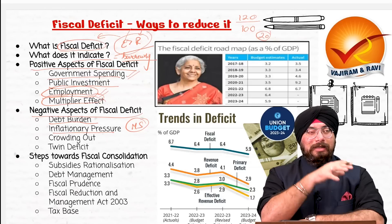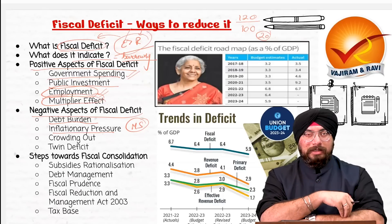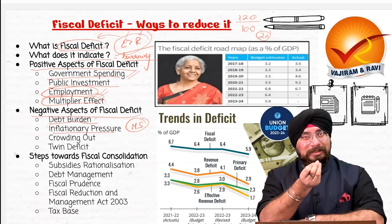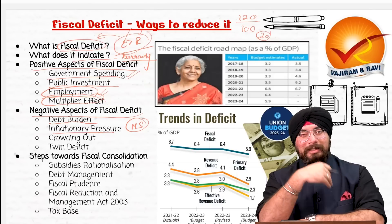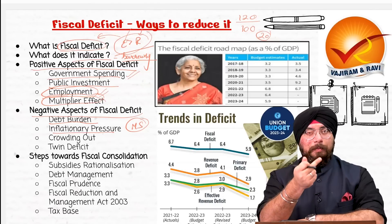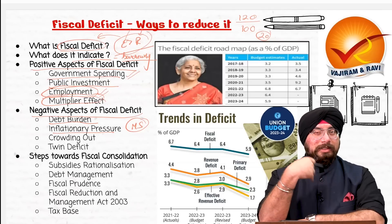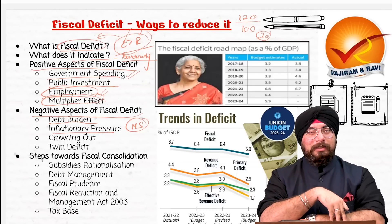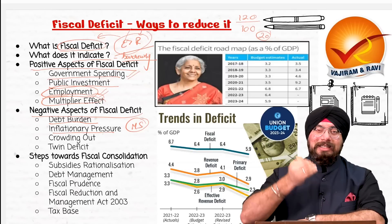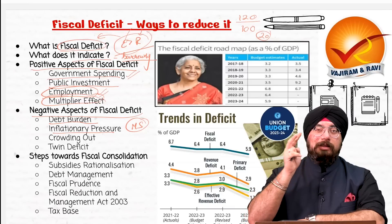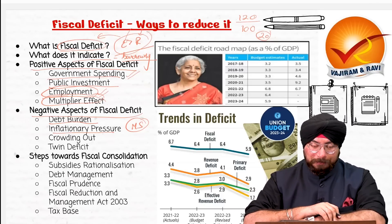How does inflationary pressure build? Suppose there is a 10-rupee item and its supply is limited. When people's income increases, someone is ready to pay 15 rupees for that 10-rupee item, someone else 16 rupees. So when supply is limited, the increase in income of people makes buying competitive and ultimately leads to inflationary pressure. Third negative aspect is crowding out — when government is spending a lot of money in the economy, it leads to crowding out of private investments. Private investments in the overall economy get reduced.